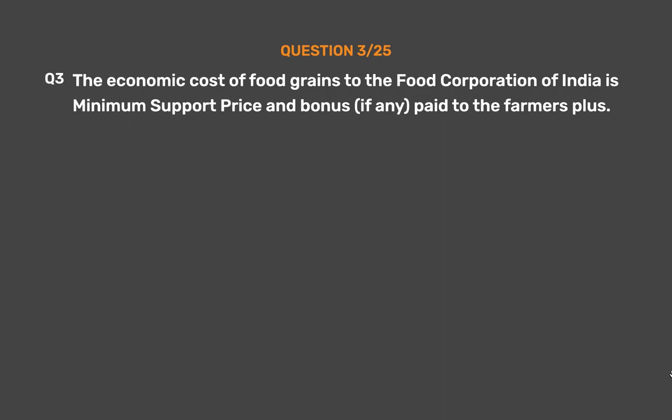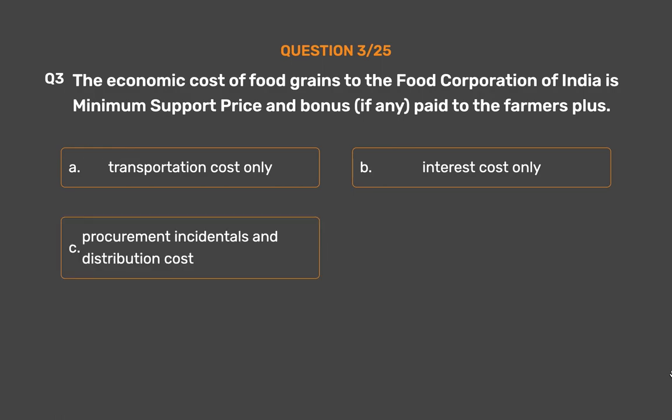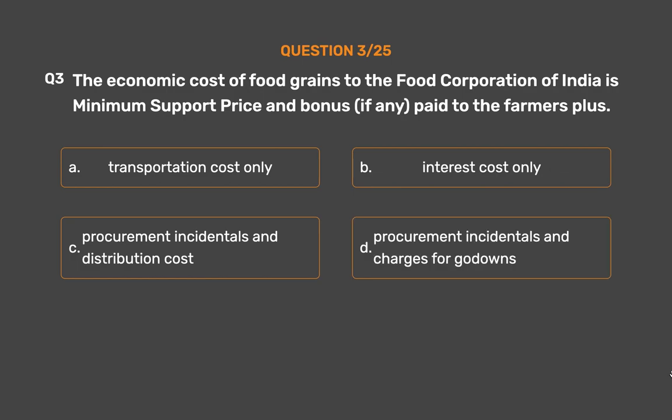Question No. 3: The economic cost of food grains to the Food Corporation of India is minimum support price and bonus, if any, paid to the farmers plus ___. Option A: Transportation Cost Only. Option B: Interest Cost Only. Option C: Procurement Incidentals and Distribution Cost. Option D: Procurement Incidentals and Charges for Godowns.